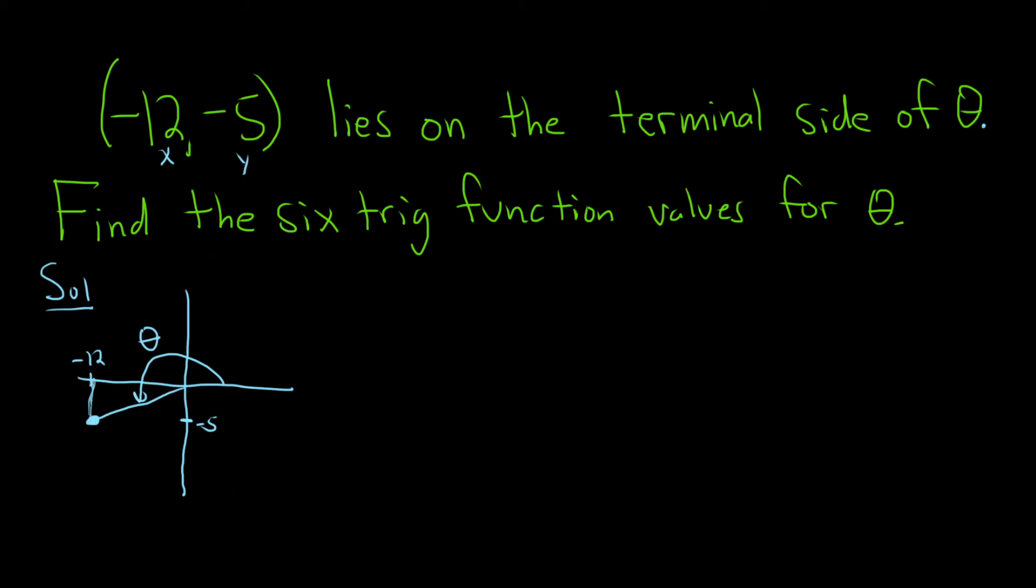The first step in this problem is to find the value of r. So r is given by the formula the square root of x squared plus y squared. So in this case x is negative 12. So this will be negative 12 squared plus negative 5 and then that is also squared.